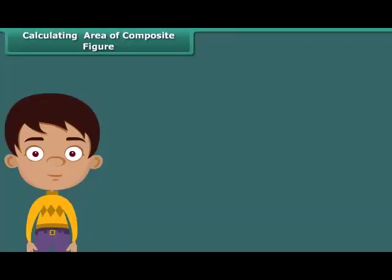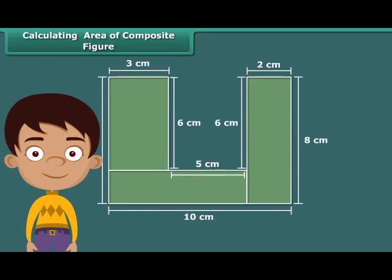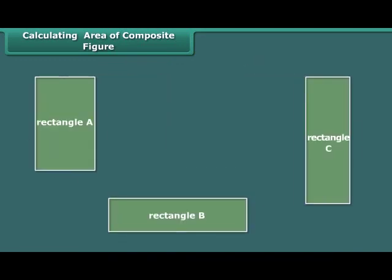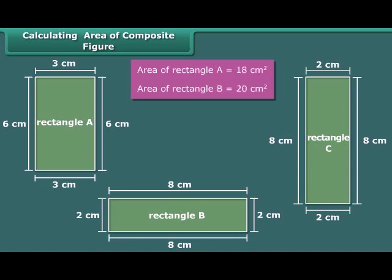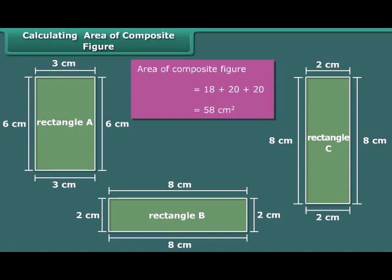Now let us calculate the area of a shape that is made up of multiple rectangles. First, break the composite figure into individual rectangles. Calculate the area of each rectangle, then sum up the areas of all the rectangles to find the area of the composite figure. Here we can divide the given composite figure into 3 rectangles. Area of rectangle A is 18 centimeters square. Areas of rectangle B and C are the same, that is, 20 centimeters square each. Thus, the area of the composite figure is 18 plus 20 plus 20, which is equal to 58 centimeters square.